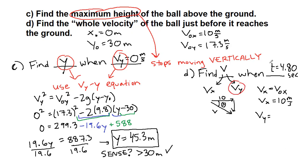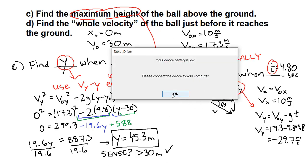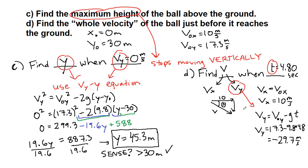For vy we need to use the vyt equation. We'll write it down first: v naught y minus gt. So our final y component is 17.3 minus 9.8 times 4.8. We do all that in our calculator and we get negative 29.7 meters per second. That makes sense because it's coming down from the top of the building, it should be moving downwards.